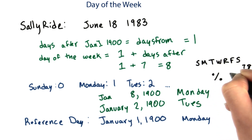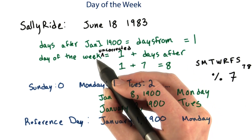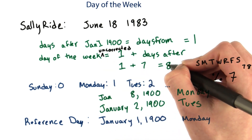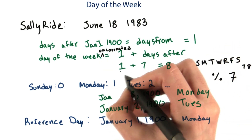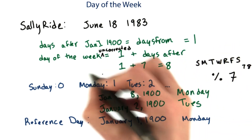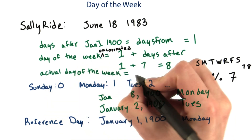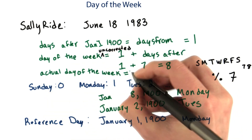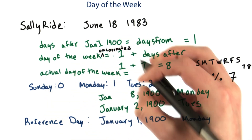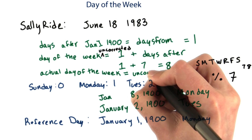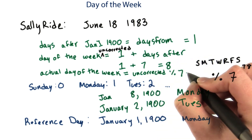In this case, mod 7. So the uncorrected value in that case would have been 8, and to correct it, I would calculate that the actual day of the week was the original uncorrected one, mod 7.